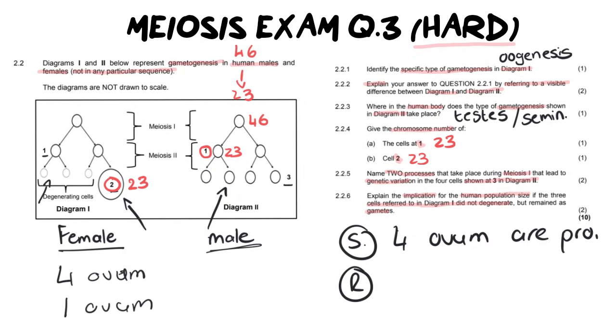Now if four ovum are produced then there are more children born or you could say more offspring or you could say more chances for fertilization to take place to have four children instead of one which equals a larger population and we've got to include that at the end of our answer because it is asking what is the implication on the human population size. Is the size going to get bigger or is it going to get smaller?